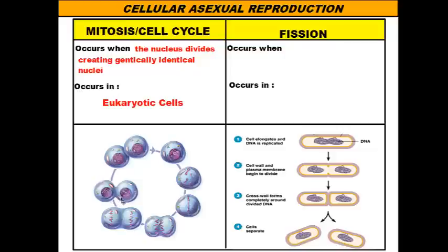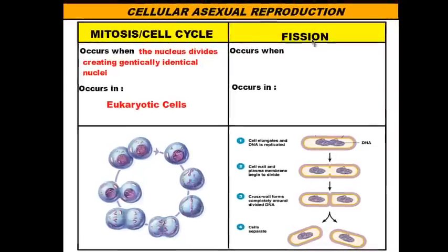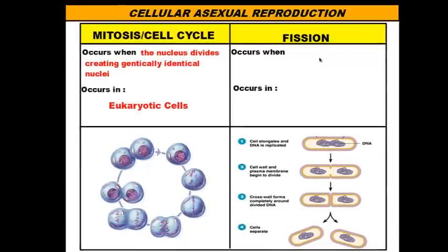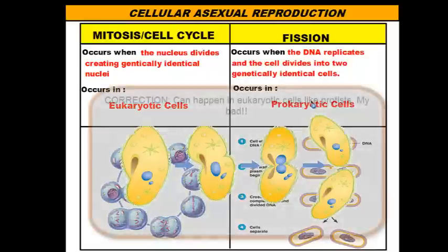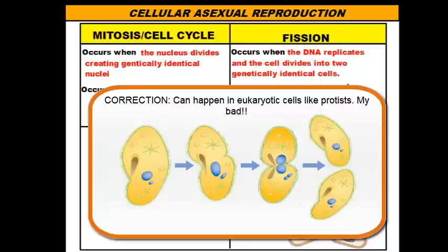The other type of cellular asexual reproduction is called fission. We talked about fission earlier with bacteria. Basically, bacteria split in two, creating two identical cells. By definition, fission occurs as the DNA replicates and the cell divides into two genetically identical cells. This occurs in prokaryotic cells — cells that don't have a nucleus.